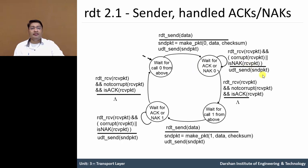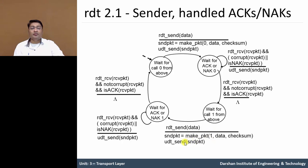In this state the sender receives data from the upper layer and creates a packet with data and checksum value. We need to add sequence number 1 in the retransmission case, and then send the same packet to the underlying channel.